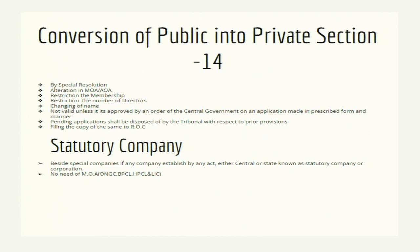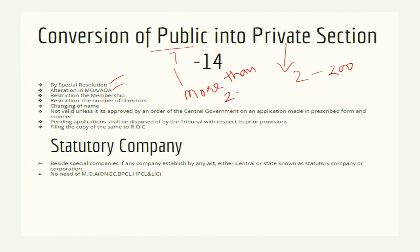Conversion of public into private company is also dealt with by section 14. A special resolution is required, the memorandum of association and article of association must be altered, and there is a restriction on membership. If converting from public to private, the minimum reduces from 7 to 2, and a maximum of 200 applies — if members exceed 200, they need to be restricted. Changing the name is not valid in this conversion unless approved by order of the central government.